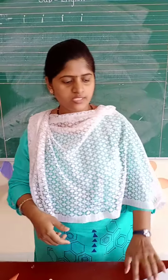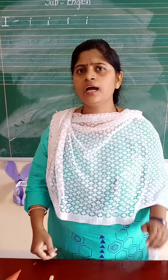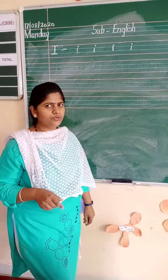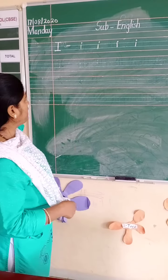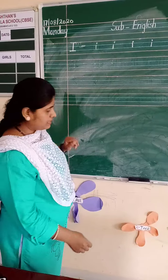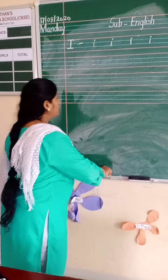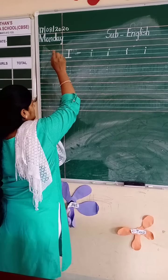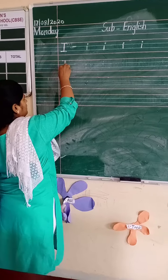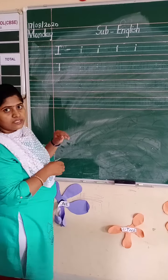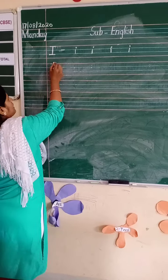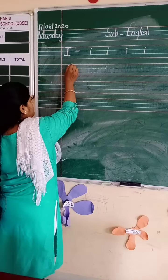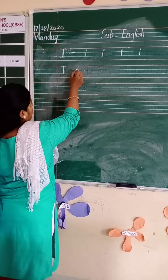Now, let's see how to write capital I. We had learnt it in the nursery class. Capital I — see here. A capital I is a standing line. We have to write in three lines: standing line, sleeping line, and sleeping line.